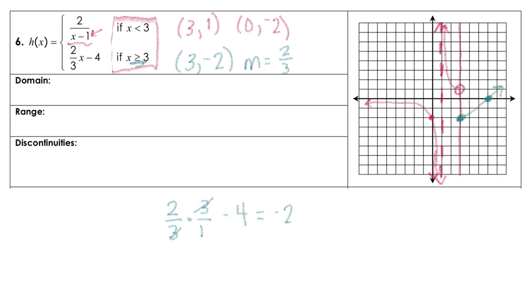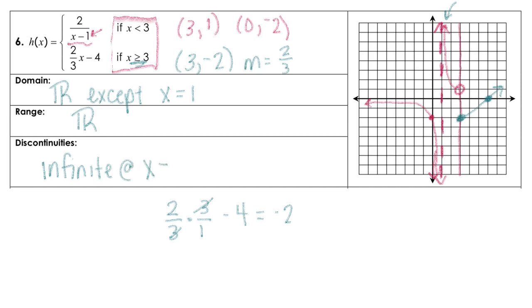Now answering the questions about this one: the domain looks like we're going to have all real numbers except — keep in mind we do have that vertical asymptote — so everything except positive 1. The range contains everything. We have a couple of discontinuities: an infinite discontinuity at x equals 1, and then a jump discontinuity at x equals 3.